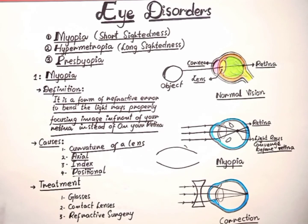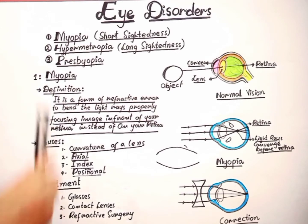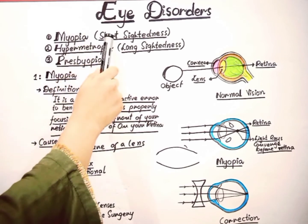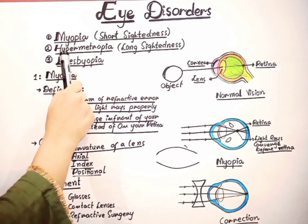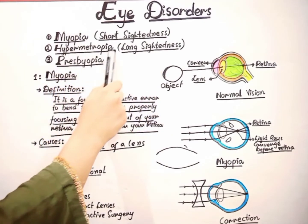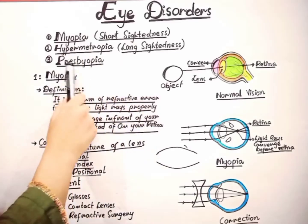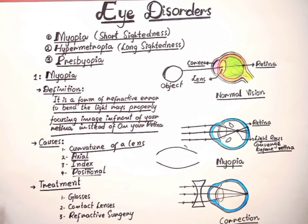Hello everyone, welcome to my YouTube channel Learn Science with Me. Today we are going to talk about eye disorders: myopia, near or short sightedness, hypermetropia or long sightedness, and presbyopia.